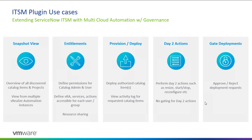In terms of the use cases, when you first deploy the plugin, you get a snapshot view of all the environments — an overview of all the discovered catalog items and projects coming from multiple VRA automation instances. These instances can be on-premises or subscription-based, which is SaaS. The plugin supports both VRA on-prem and VRA cloud.